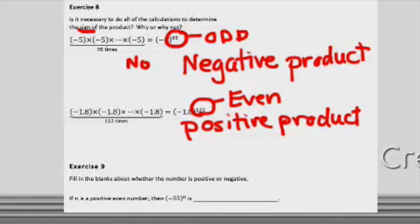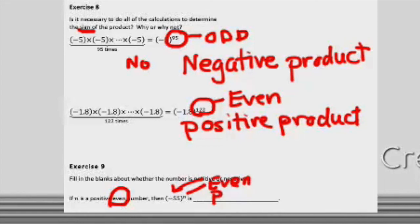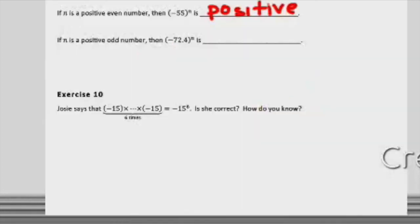Now looking at exercise nine, we want to fill in the blanks about whether the result is positive or negative. If n is a positive even number, then negative 55 to the nth power must be a positive value. Then if n is an odd number and we've got a negative to the nth power, where n is odd, that would give us a negative product.